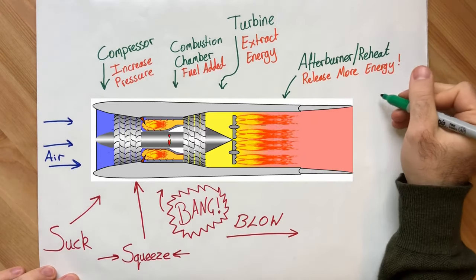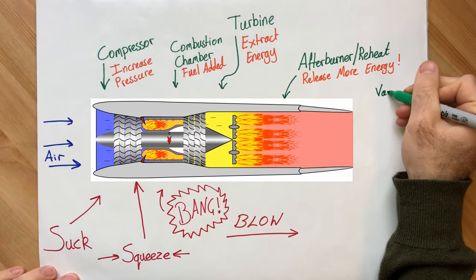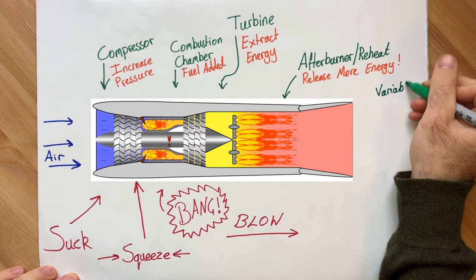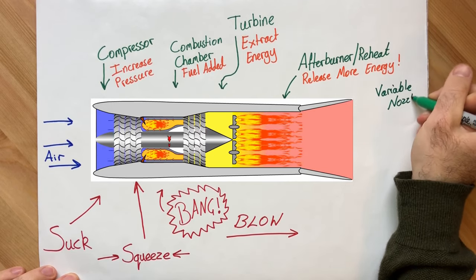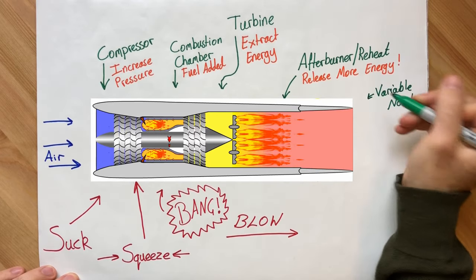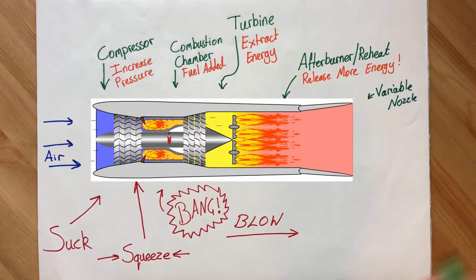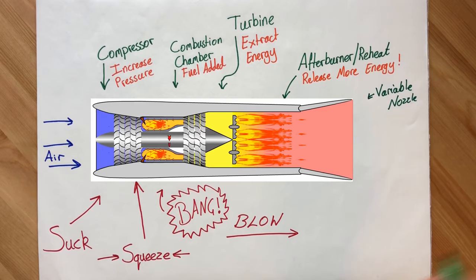When we add this extra fuel, we are yet again expanding the air, just as we saw with the balloon experiment. The engine now has to let a greater volume of air out the back, and to do so it has a variable nozzle which opens at the rear.